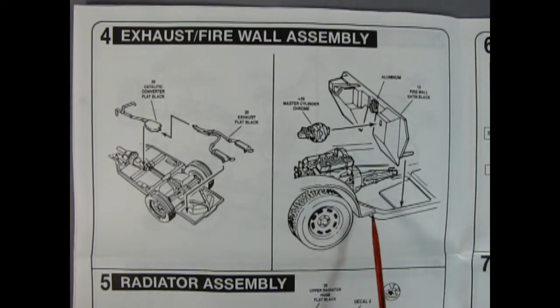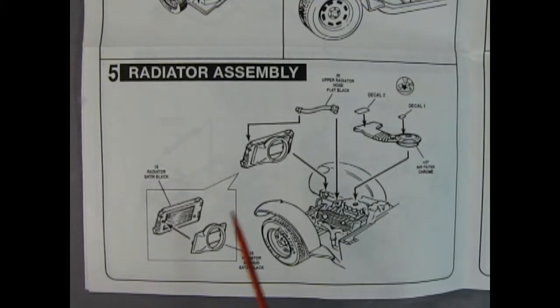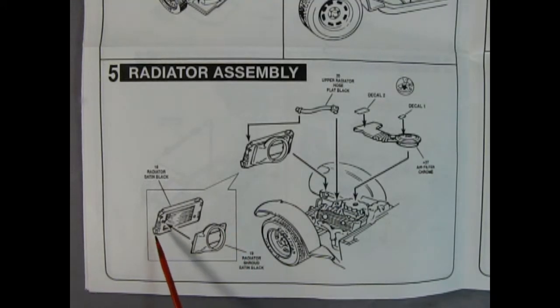Next up we have the radiator assembly - we've got this nice radiator here with the radiator shroud that glues on. This then drops into our front fenders in this notch and then we can attach our upper radiator hose to our radiator and then drop on our air cleaner and air filter assembly.